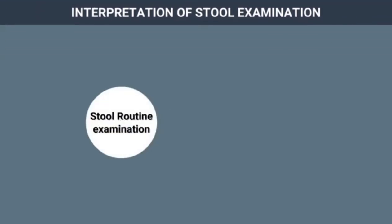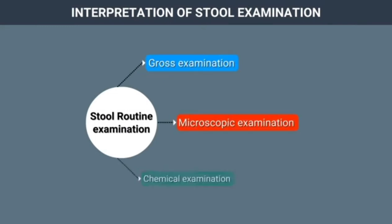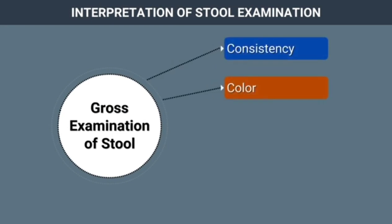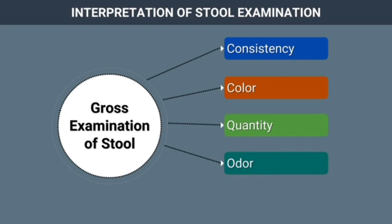Interpretation of Stool Examination. Stool Routine Examination includes Gross Examination, Microscopic Examination, and Chemical Examination when indicated. Gross Examination of stool includes Consistency, Color, Quantity, Odour, and Presence of Mucus or Blood.